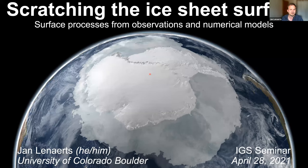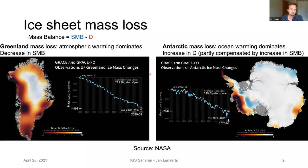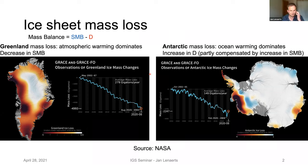Before I go into surface mass balance, I want to give a brief reminder that the ice sheets are losing mass. This shouldn't be a surprise to anyone, but it's sometimes good to be refreshed, especially with these new GRACE and GRACE follow-on derived estimates of ice sheet mass loss, as you can see here from Greenland on the left and Antarctica on the right. Mass loss is basically implying that the mass balance — the change in ice sheet mass with time — is negative. So the difference between SMB, the surface mass balance input term, and discharge D, the output term, is negative. Although both ice sheets are losing mass, they are losing mass by different mechanisms.